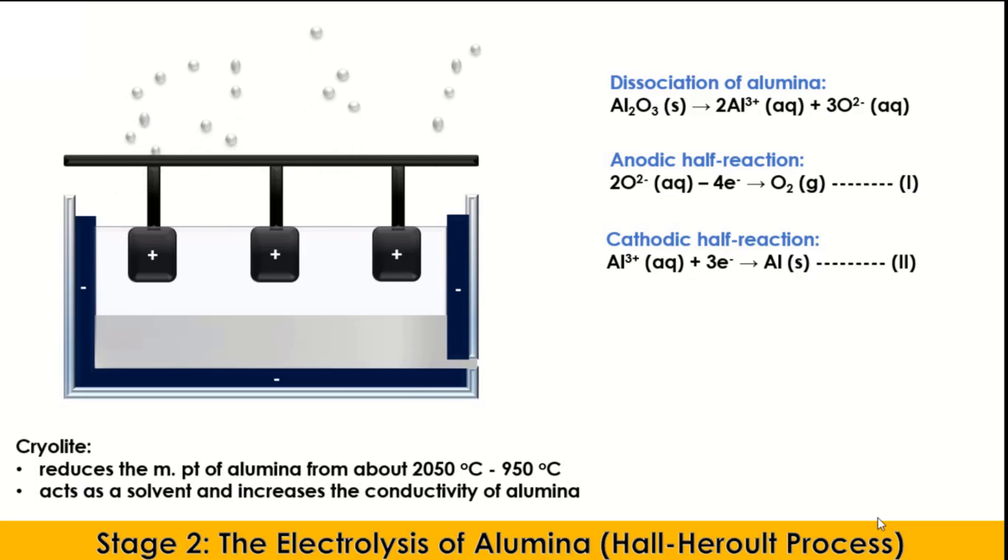In order to balance the number of moles of electrons transferred in the electrolytic process, we multiply the oxidation half equation by 3 and the reduction half equation by 4, and then combine the two balanced half equations to get the overall cell reaction.